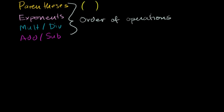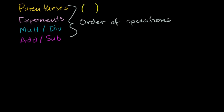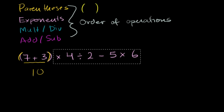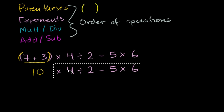Let's do another example: (7 + 3) times 4 divided by 2 minus 5 times 6. There are all sorts of operations here, but if you just follow the order of operations, you'll simplify it cleanly. First, look for parentheses — yes, there are parentheses around 7 plus 3. So we do that first: 7 plus 3 is 10. So this simplifies to 10 times 4 divided by 2 minus 5 times 6.